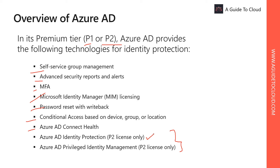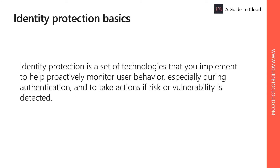Azure AD Privileged Identity Management lets you configure additional security levels for privileged users such as administrators. With Privileged Identity Management you define permanent or temporary administrators and define a policy workflow that activates whenever someone wants to use administrative privileges to perform tasks.